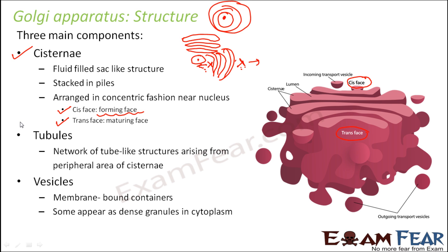The next important component is tubules — a network of tube-like structures arising from the peripheral area of the cisternae. The third component is vesicles, which are membrane-bound containers that appear as dense granules in the cytoplasm. So the three important components of Golgi apparatus are cisternae, tubules, and vesicles.